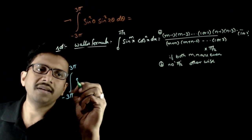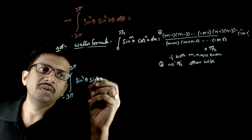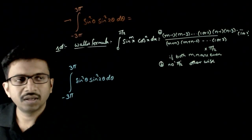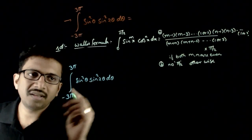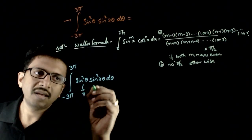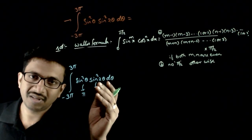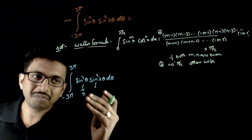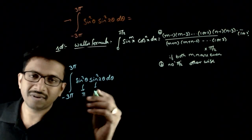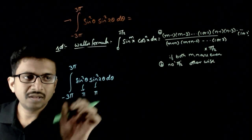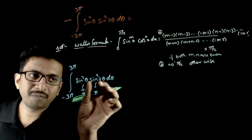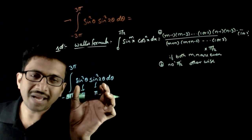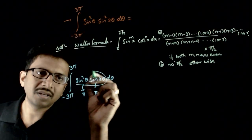Let us try to simplify this integral from minus three pi to three pi of sine square theta into sine square two theta d theta. The period of sine square theta is pi, and the period of sine square two theta — the fundamental period is pi by two — but we can take pi as a period of this function also. So, sine square theta repeats after an interval of pi, and sine square two theta also repeats after an interval of pi. Hence, pi is the period of this combined function.